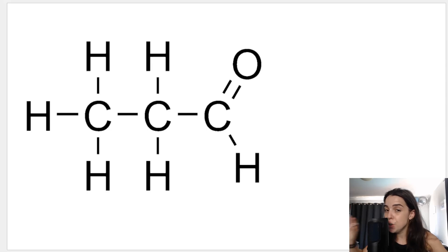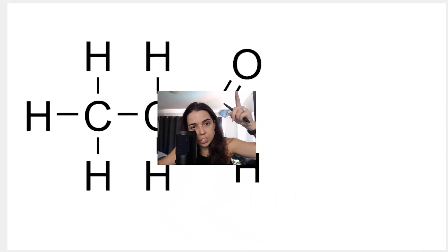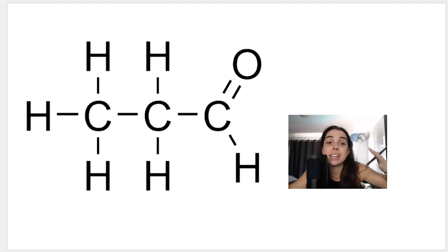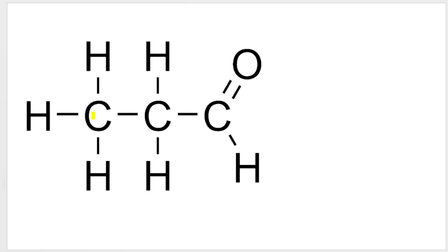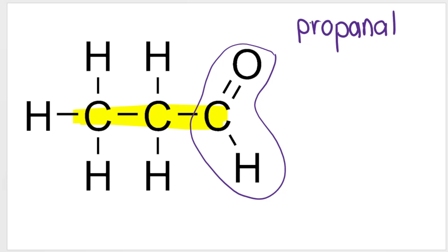Looking at this compound: how do you recognize it's an aldehyde? You see the carbon double bond oxygen with the H, located at the end of the chain. The longest chain has one, two, three carbons, so it's going to be prop-. This tells me it's an aldehyde, so you write the name as if it were an alkane — propane — but take away the E and end in AL: propanal. No numbers in the name because this is always carbon one, carbon two, carbon three.